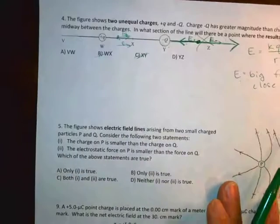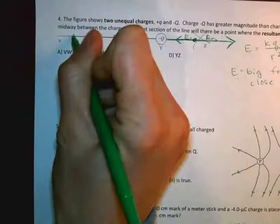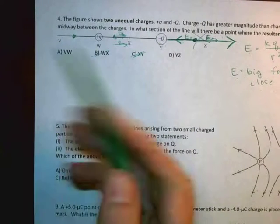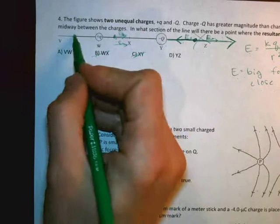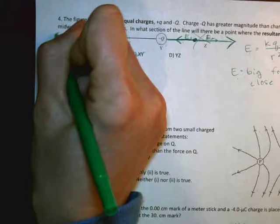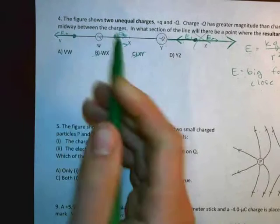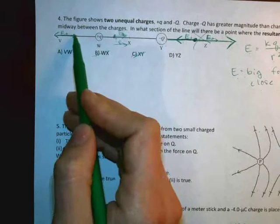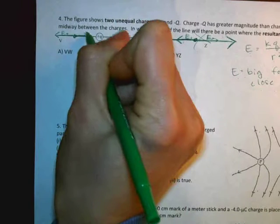Now if I move to the other side, over here, I can have, again, my E's will point in opposite directions. So E plus is going to point away from the positive charge. It'll point to the left. And E minus will point toward the negative charge. So it will point to the right.